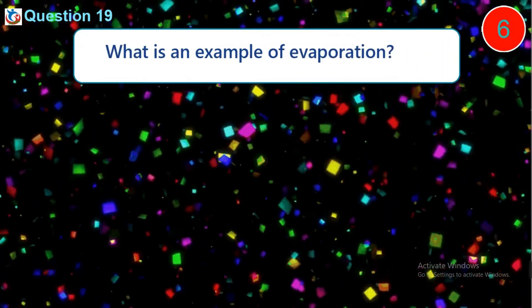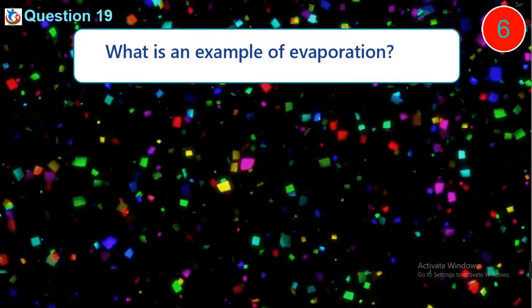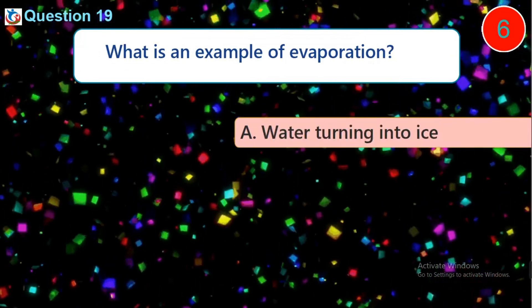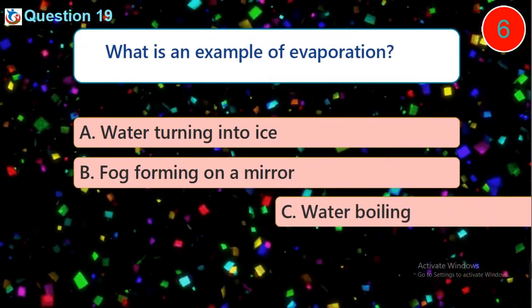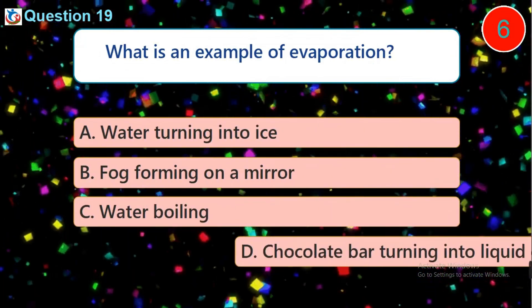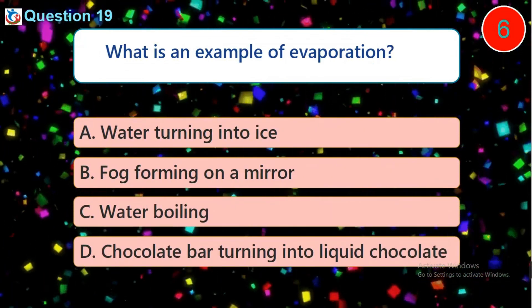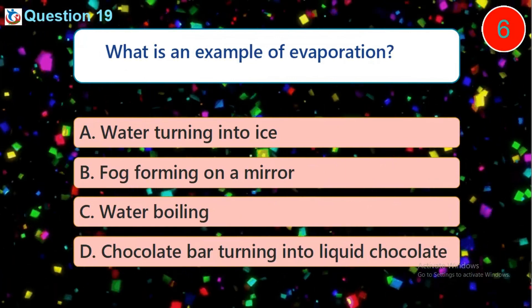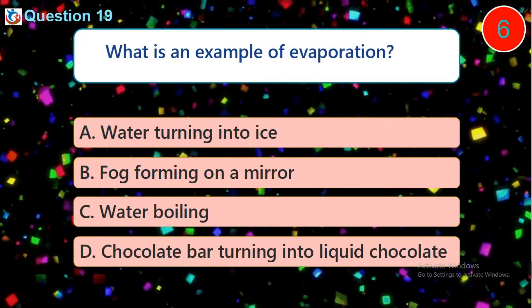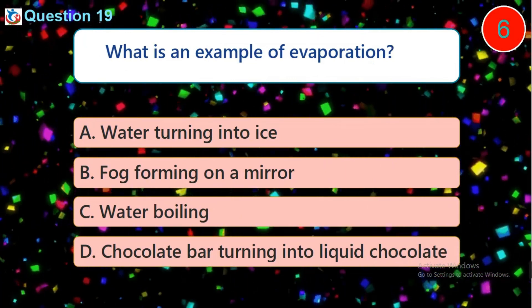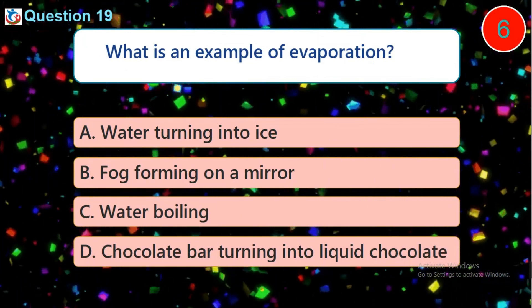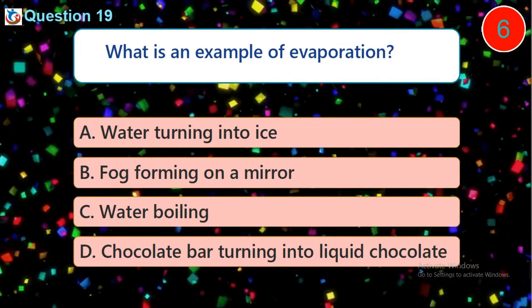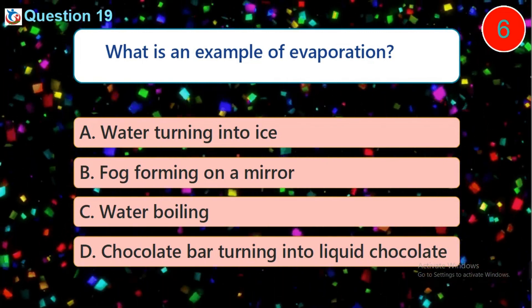Question 19. What is an example of evaporation? A. Water turning into ice. B. Fog forming on a mirror. C. Water boiling. D. A chocolate bar turning into liquid chocolate.